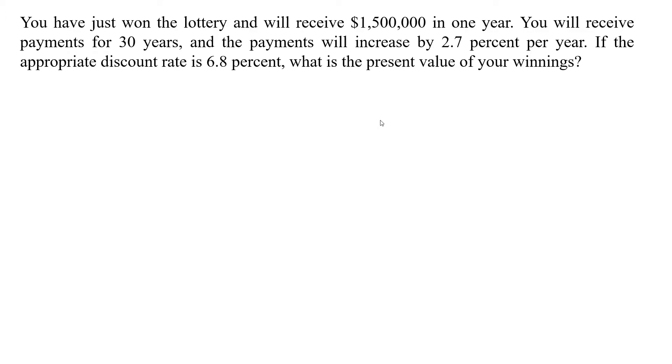Here we have to calculate present value of growing annuity to find the present value of your winning lottery. The present value of growing annuity is equal to cash flow divided by R minus G, into 1 minus 1 plus G divided by 1 plus R, raised to power N and close bracket.